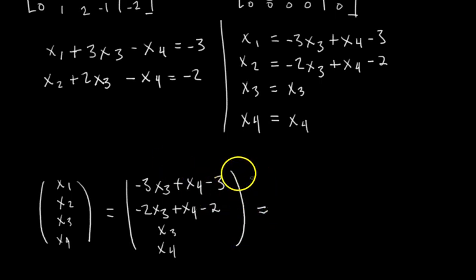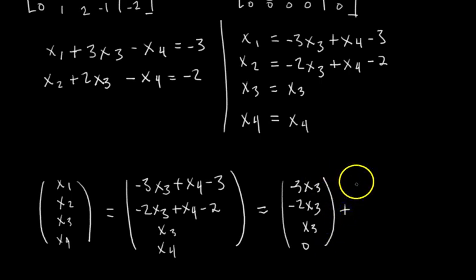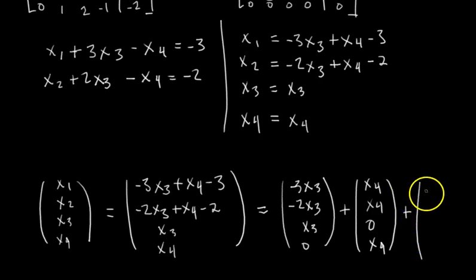Now we can break this up into multiple vectors that each share either x3 terms, x4 terms, or constant. So we're going to split it into three vectors. So we have negative 3x3, negative 2x3, x3, 0. So this vector has all the x3 terms. Plus a vector with all the x4 terms. Plus a vector with all of the constants.